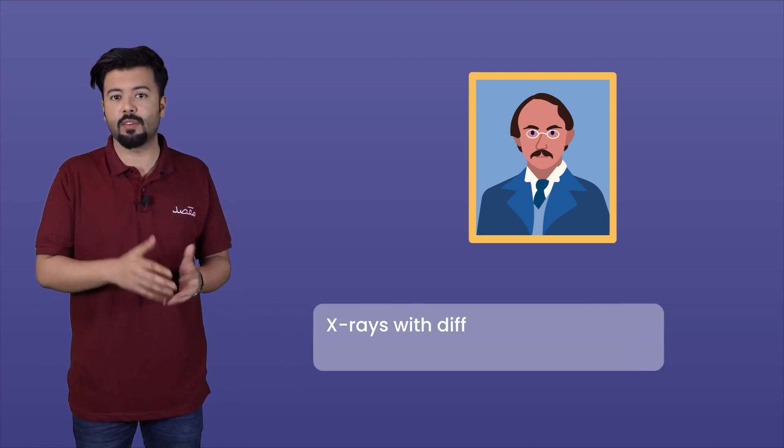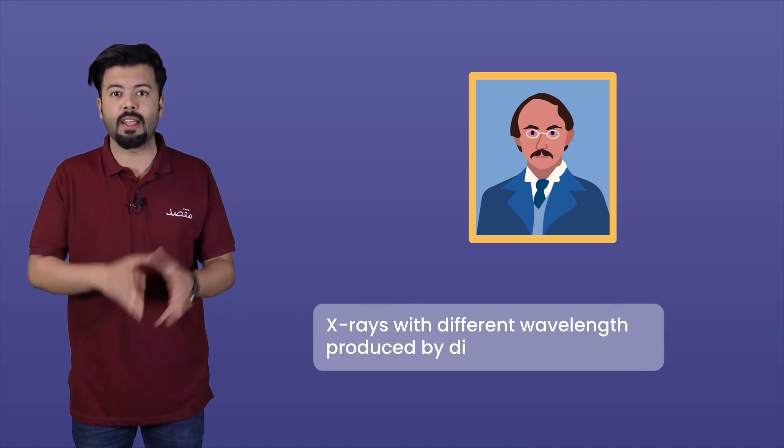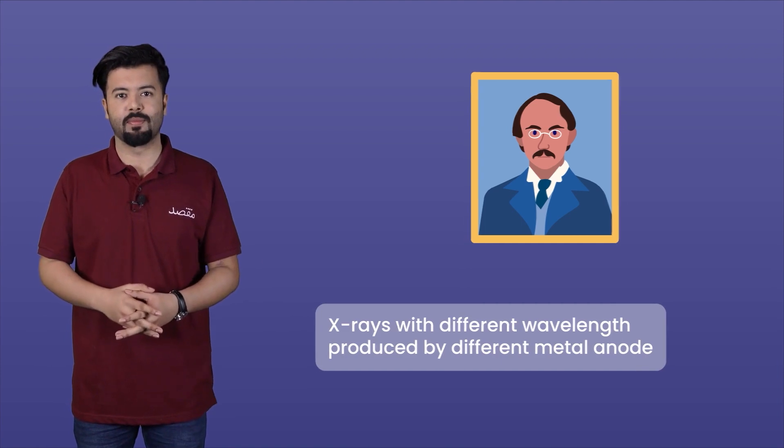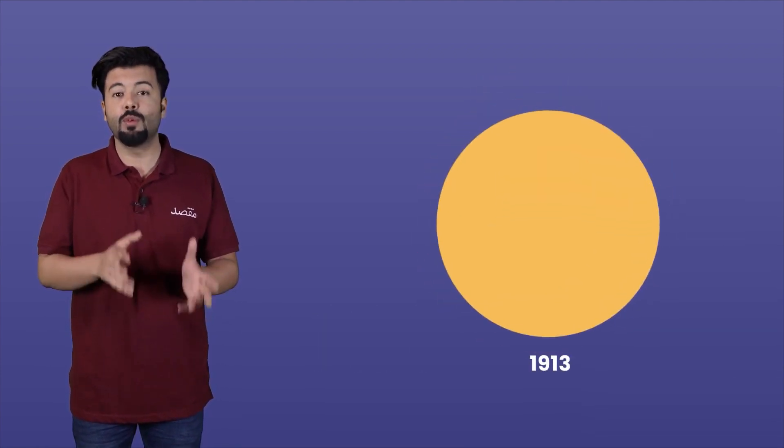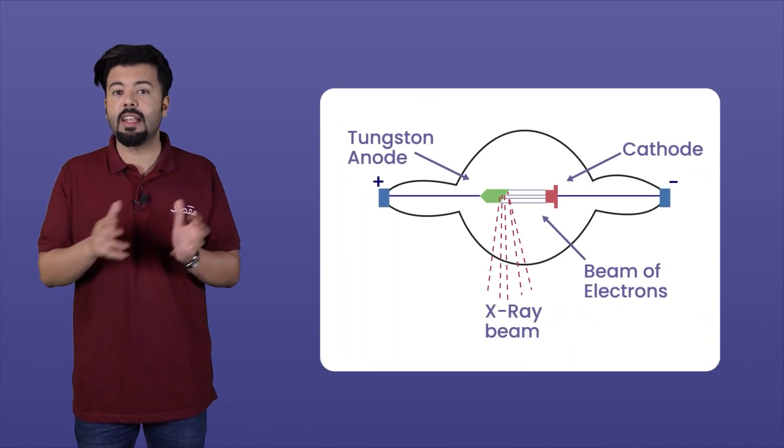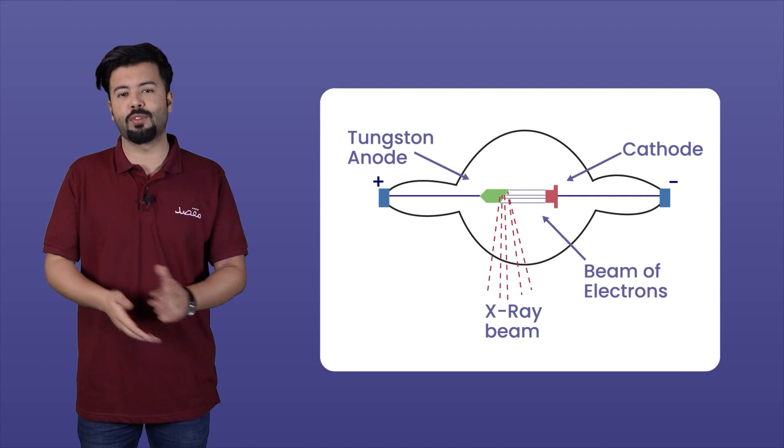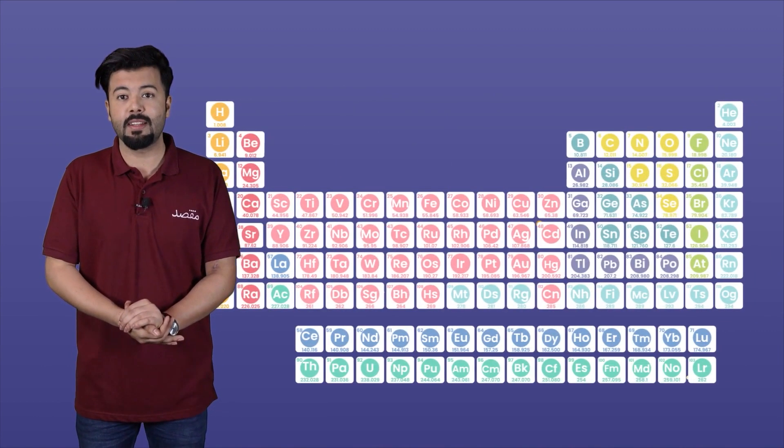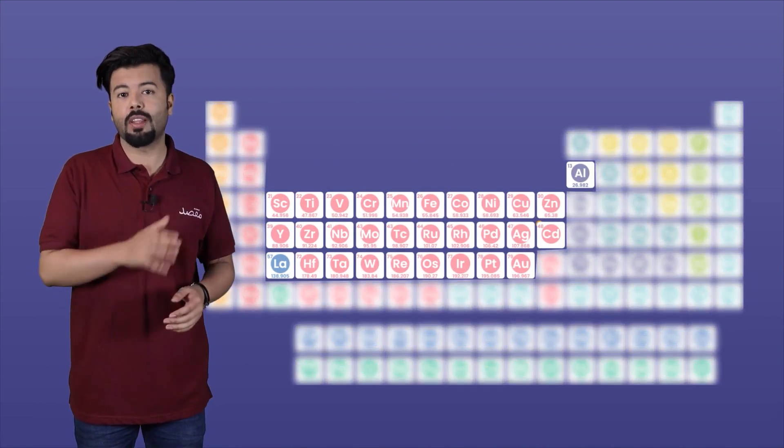He studied different wavelengths of x-rays produced by different metal anodes. In 1913, Mosley studied different wavelengths of x-rays which were produced from different metal anodes. In the experiment, 38 different elements were used as metal anodes. Those elements ranged from aluminum to gold.